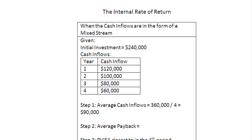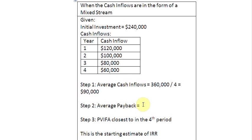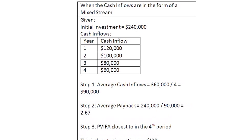Step two is to find out the average payback period, which is equal to the amount of initial investment — $240,000 — divided by the average cash inflow of $90,000. That gives us 2.67 years.